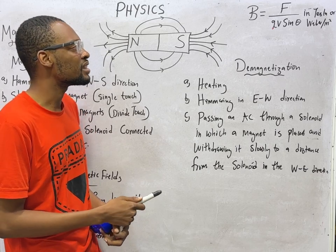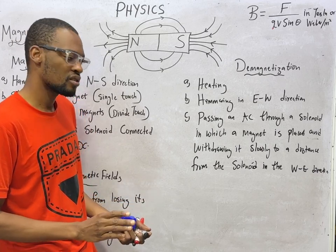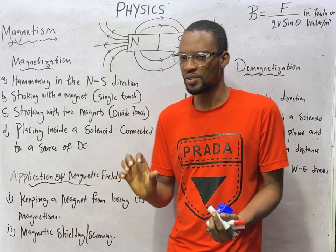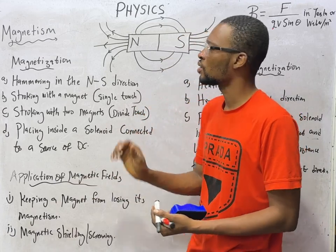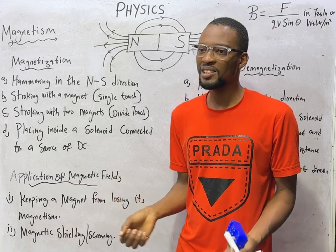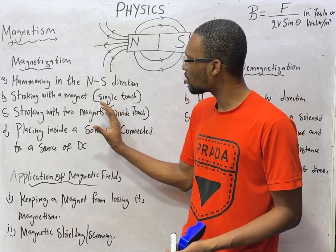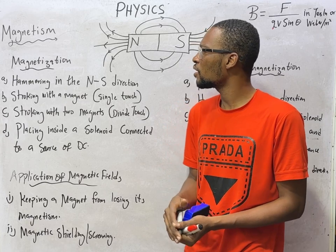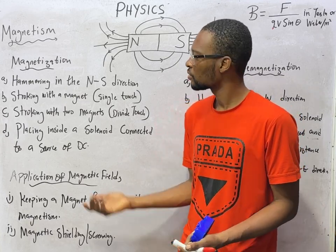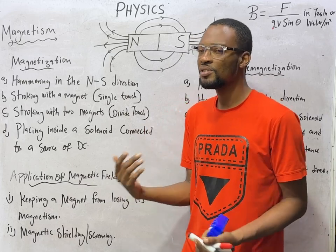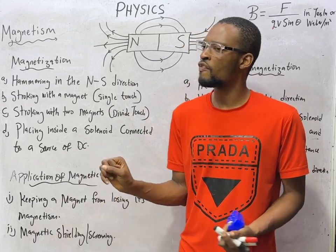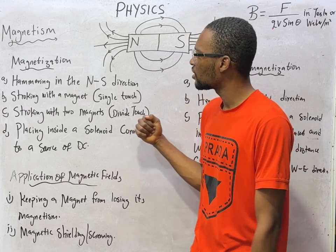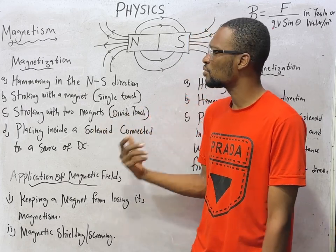Magnetic field is measured in Tesla or Weber per metre squared. Back to magnetization — this is how exam questions normally come. The methods of magnetization are: Number 1, hammering in the North-South direction — when you hammer in the North-South direction, you can produce a magnet. Number 2, stroking with a magnet — when you stroke an object with a magnet, it is called single-touch, and a magnet can be produced that way.